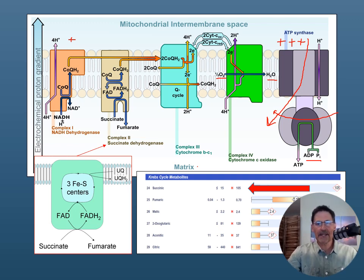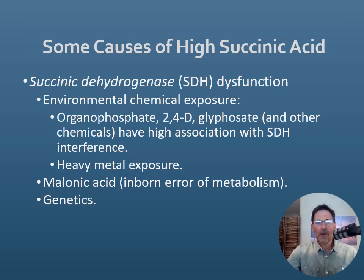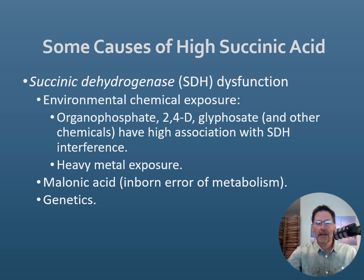On organic acid tests — it doesn't matter which one you use — all of them will have a succinic acid or succinate marker, and it's often elevated in people. Some causes of high succinic acid can be dysfunction in the succinic acid dehydrogenase enzyme itself. That could occur because of environmental exposures such as heavy metals or organophosphates. Glyphosate, for example, is known to interfere with succinate dehydrogenase, as are heavy metals. There could also be genetic factors affecting enzyme function. Interestingly, malonic acid — linked to an inborn error of metabolism — is also an inhibitor of succinate dehydrogenase, and from time to time you will see elevations of malonic acid, particularly in children.